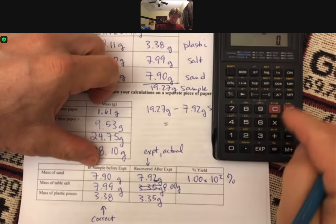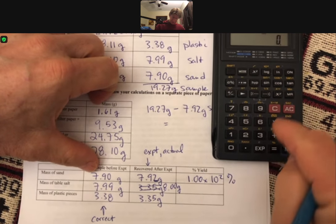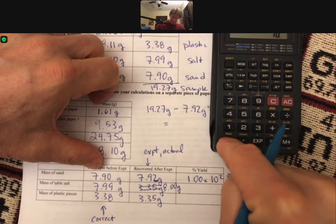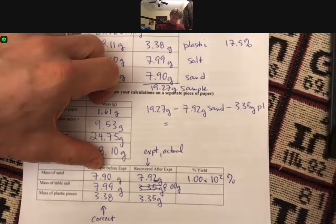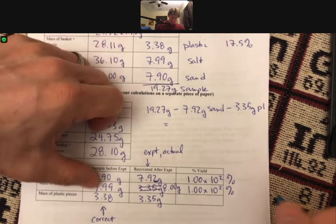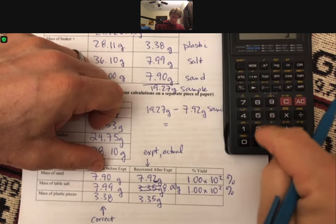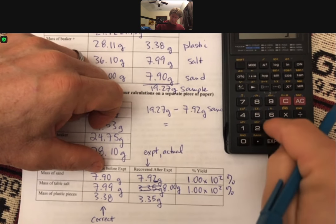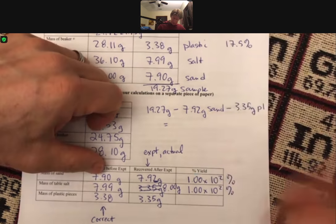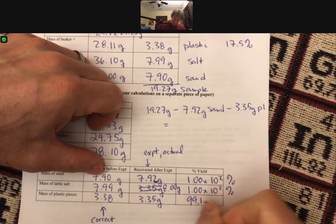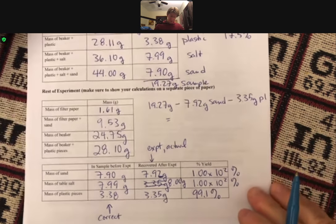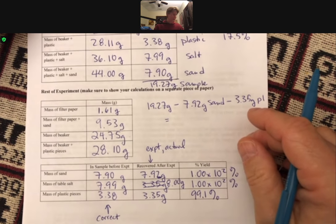I think we're going to get 100% for all of these, which is good. That means that this experiment does work. Divided by 7.99 times 100. Same thing again. 100%. This one might be a little bit off. So 3.35 divided by 3.38 times 100. Yeah, this one, I get 99.1%, which is easy to do with 3 sig figs. And those are percent yields.